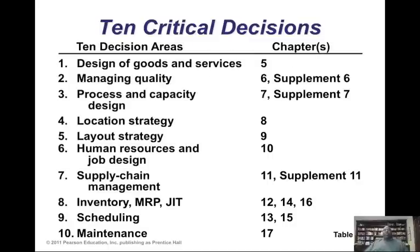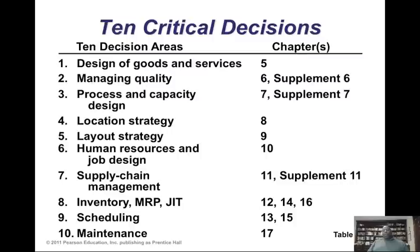When we look at the operations function in an organization, it can be viewed through a set of smaller lenses. In our text, they refer to this idea of 10 critical decision areas — we could think of them as 10 dimensions of operations. When we want to think about various aspects of an organization as operational elements, we can think of one of these 10 areas or dimensions. We call them decision areas because, as part of operations management, we make decisions in these categories. The first is the design of goods and services.